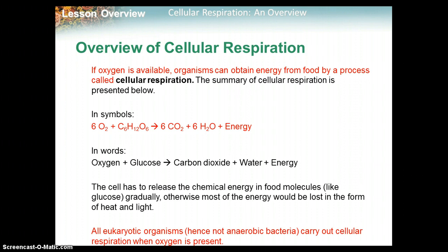The cell has to release the chemical energy in food molecules like glucose gradually. Otherwise, most of the energy would be lost in the form of heat and light — this is known as a combustion reaction in chemistry, a hydrocarbon reacting with oxygen to make carbon dioxide and water. Combustion reactions are what happen when you light things on fire. Cellular respiration is therefore a very controlled combustion reaction. All eukaryotic organisms carry out cellular respiration when oxygen is present. Anaerobic means without oxygen, which we'll see later.